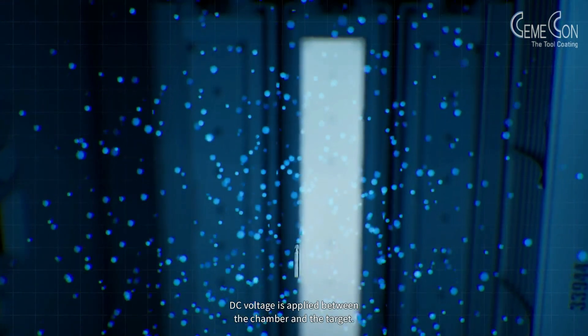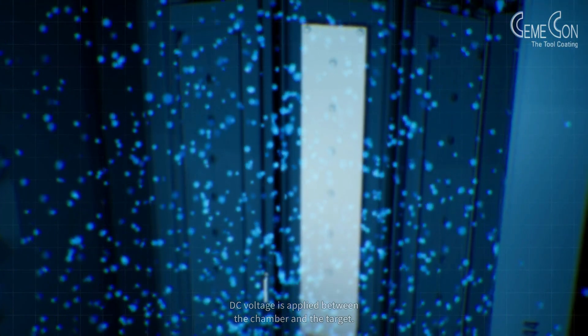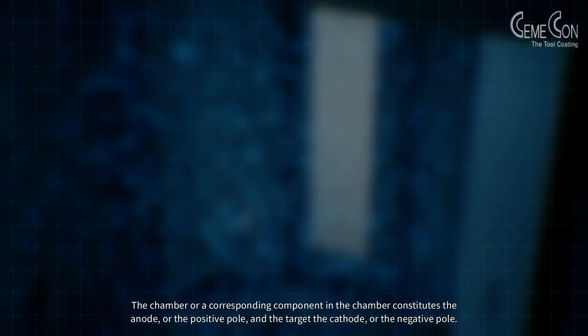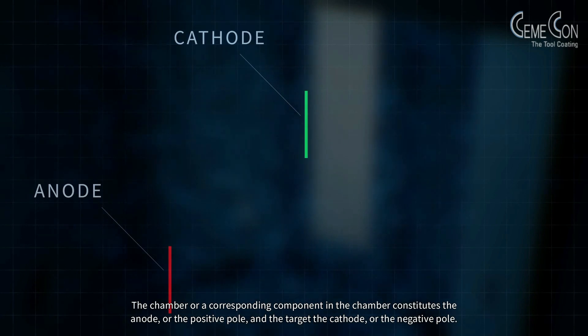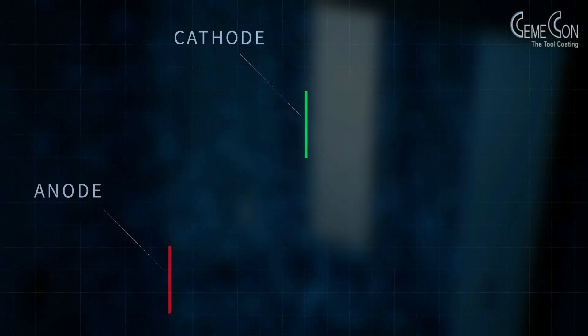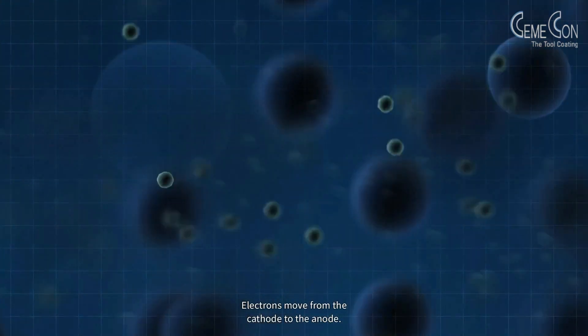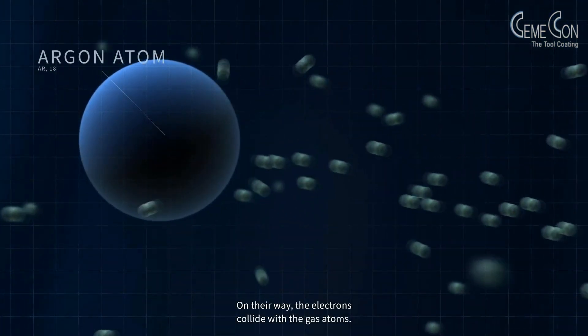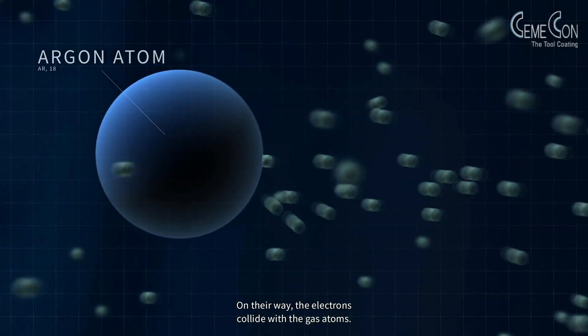DC voltage is applied between the chamber and the target. The chamber or a corresponding component in the chamber constitutes the anode or the positive pole and the target the cathode or the negative pole. Electrons move from the cathode to the anode. On their way, the electrons collide with the gas atoms.